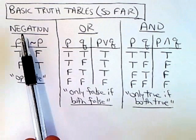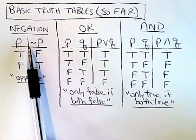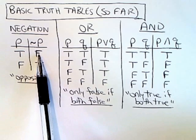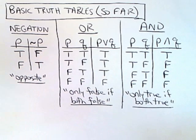And I'm just going to briefly mention it, but you should already know this. The basic truth tables we've had so far are for negation. You only have one statement here and you're negating it. If the statement is true, the negation is false. If the statement is false, negation is true. I just think opposites there.